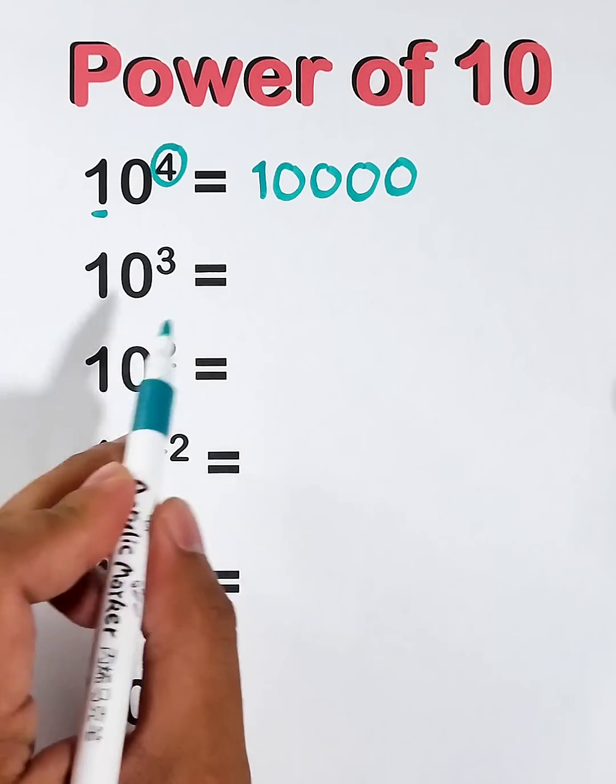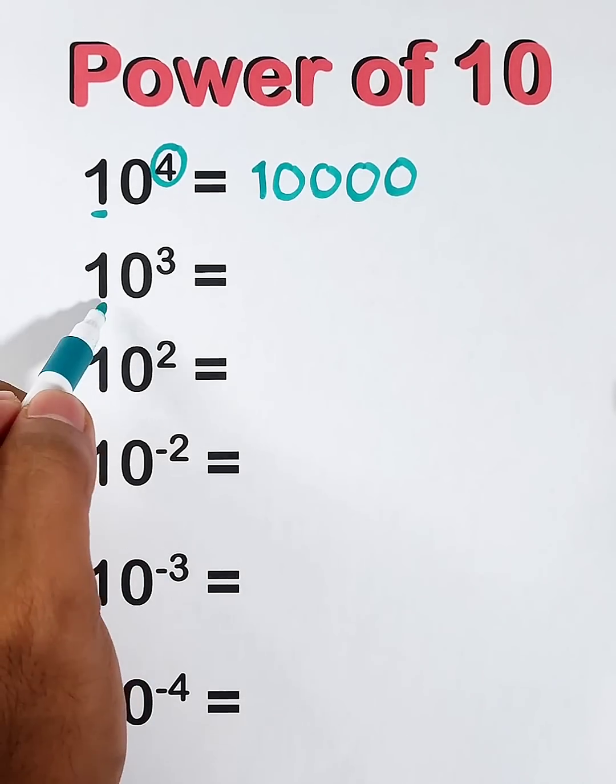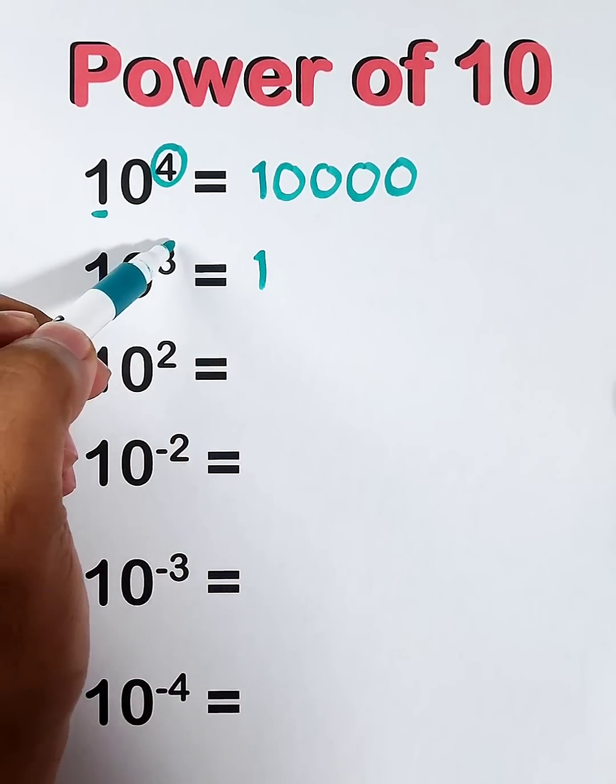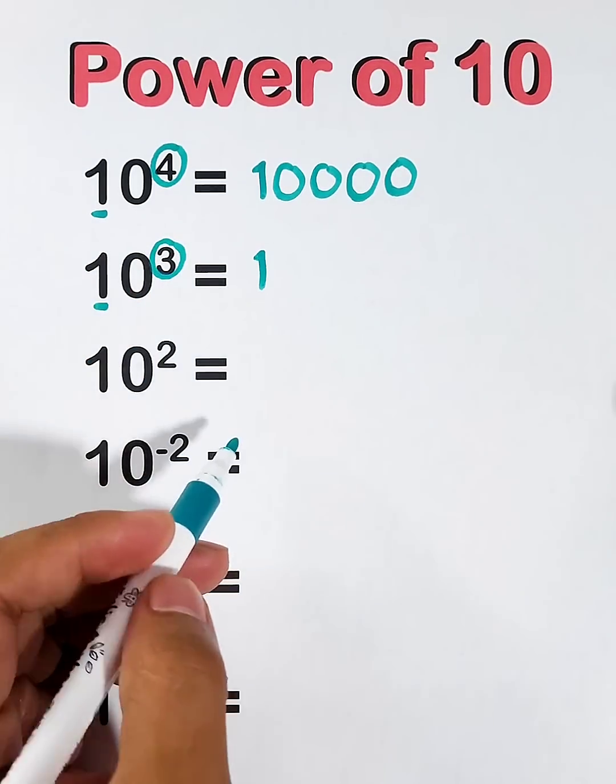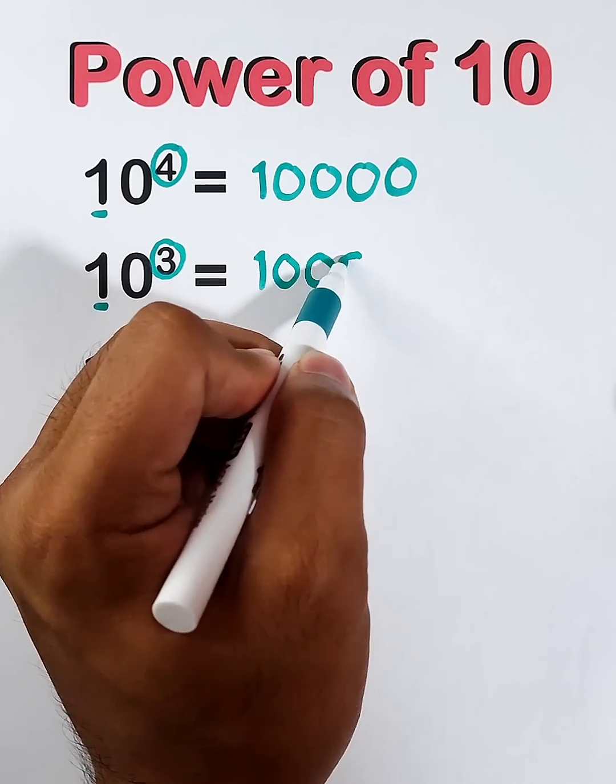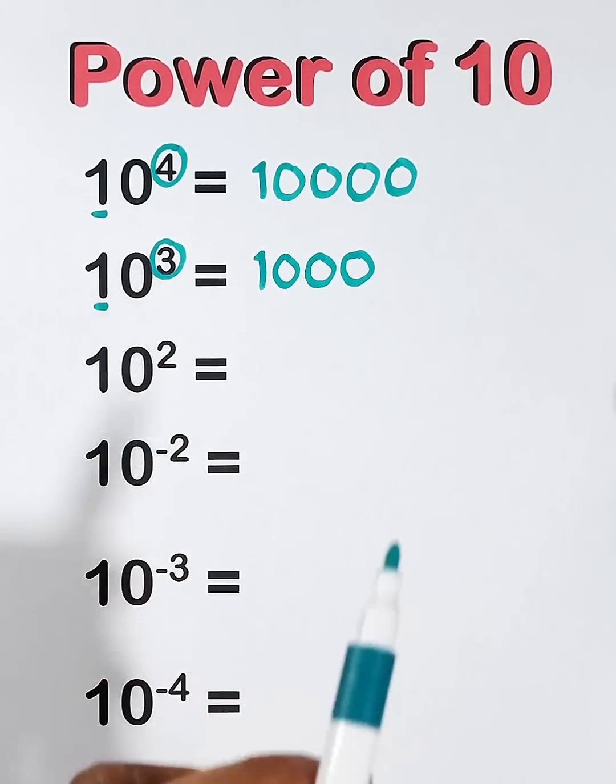Now let's go with 10 raised to the third power. Let's try and use the same pattern. Copy 1, and the exponent is 3, meaning we need to write 3 zeros: 1, 2, and 3. And as you can see, 10 raised to the third power is 1,000.